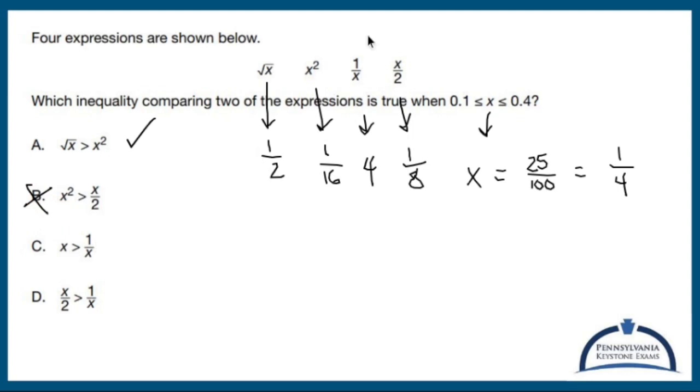X, so the regular guy, one-fourth, is going to be bigger than one over x. No, one-fourth is not bigger than four. And x over two, which is one over eight, is going to be bigger than one over x. Nope, one over eight is not bigger than four, so it's A.